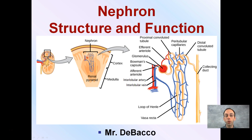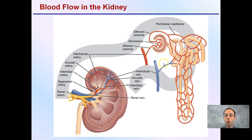Here we're going to look at the distinctive structure and function of the nephron, which is located in the kidney. There are over a million nephrons per each kidney, which is important for the filtration of blood. Looking at the blood flow in the kidney, we have an intense network of capillaries with veins and arteries surrounding the nephron, allowing nutrients, water, and ions to be exchanged.